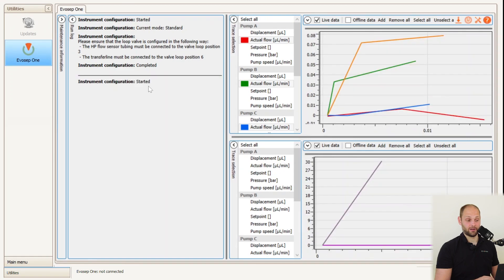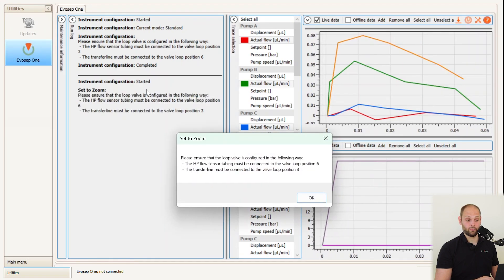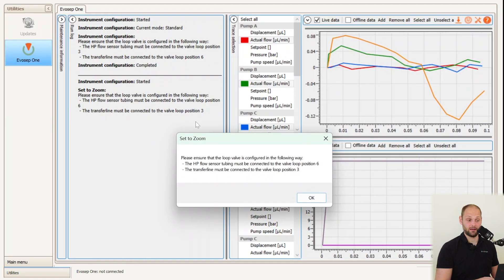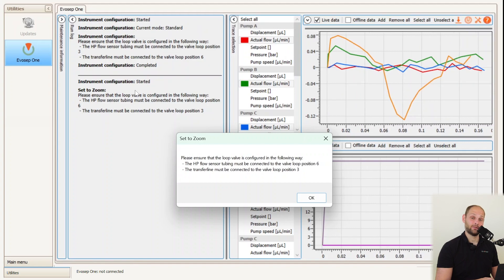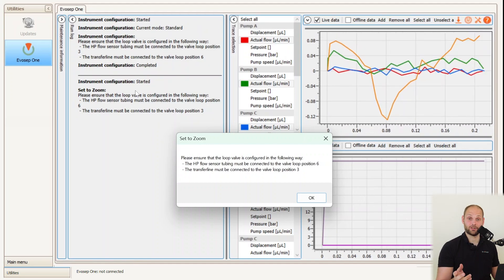After the configuration has finished, we'll be presented with this information informing us that we now need to manually reconfigure the plumbing on the loop valve, which I'll now show.